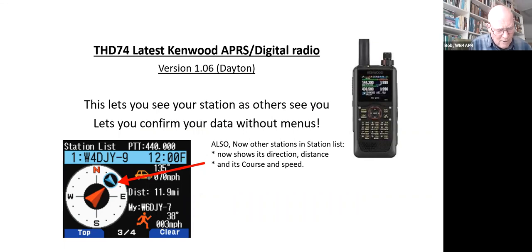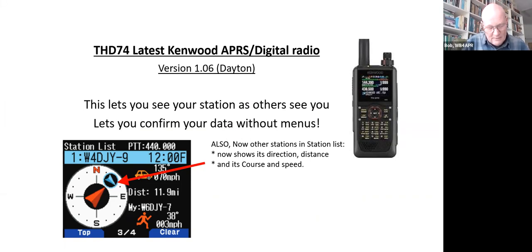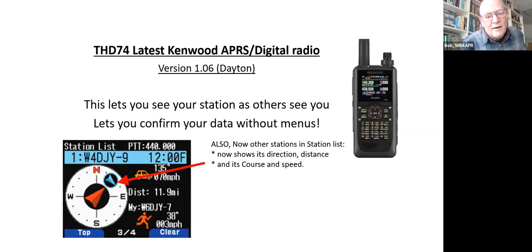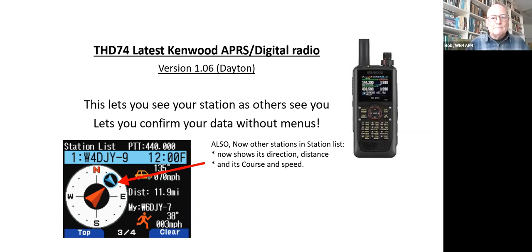One of the most valuable APRS capabilities at special events is objects — any operator can put an object on the map for everybody to see, with over 200 possible symbols expandable locally. With the THD-74, the latest Kenwood HT, you can now enter an object directly from the radio. If you're at a fire, you enter the object name as 'fire,' use your current location, and your radio transmits not only your position but also the location of that object, keeping everybody informed.